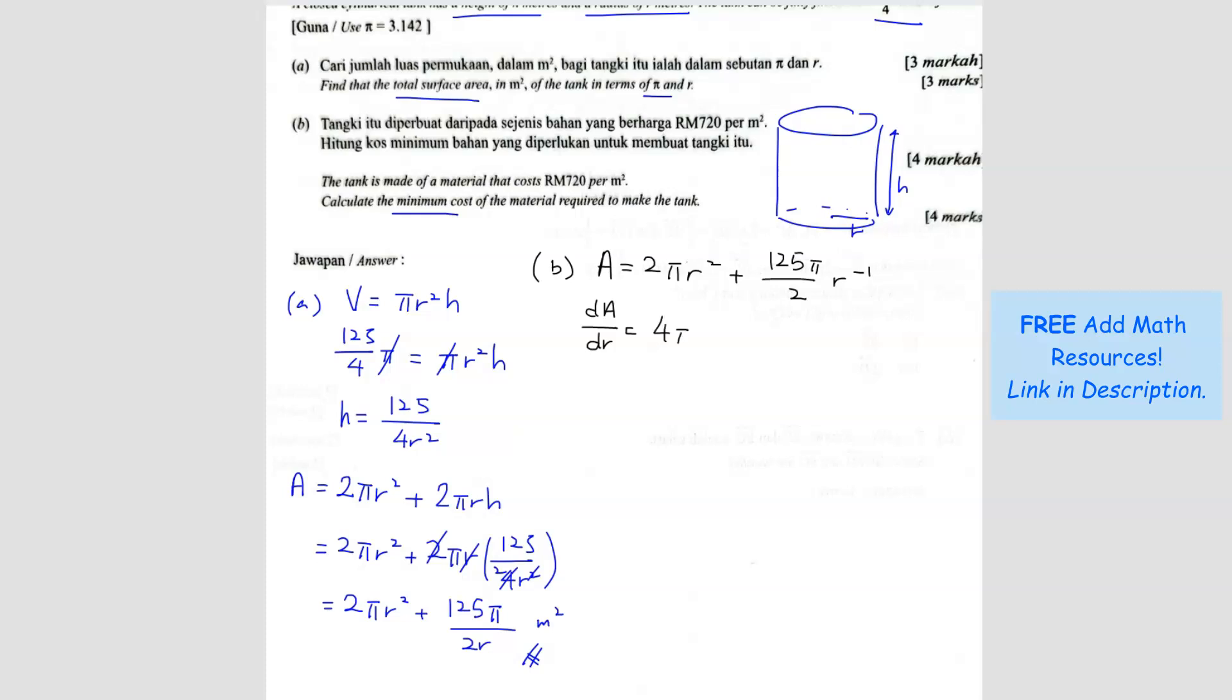We're going to differentiate. So you get 4 pi r, wait, not plus, minus, because you're going to times the negative in front. So negative 125 pi. And then the r here becomes r to the negative 2, because you subtract 1 from the exponent. So it's over 2 r squared, equals 0.